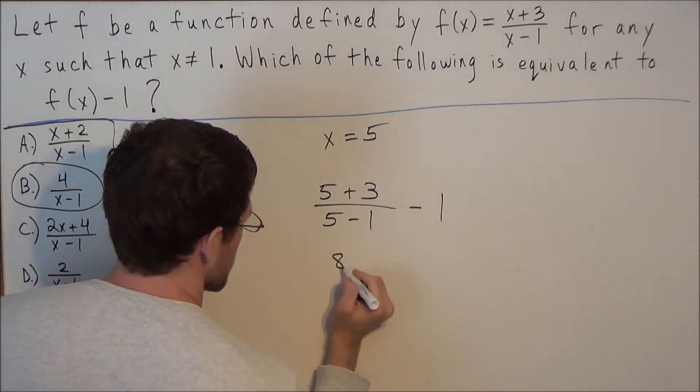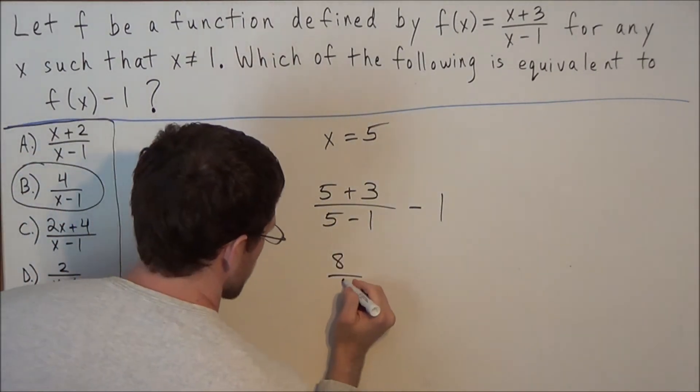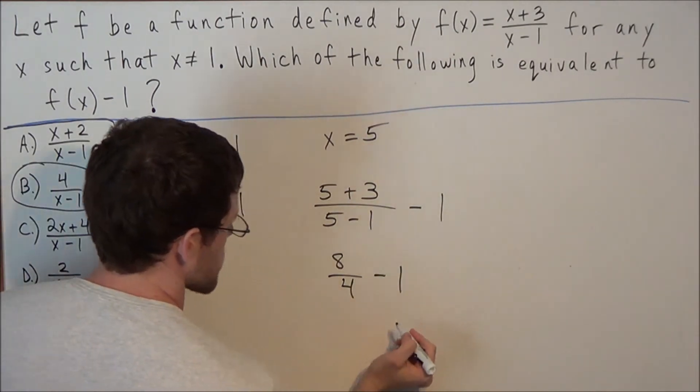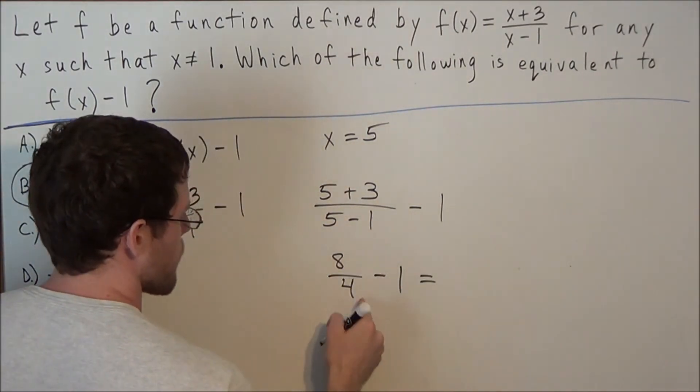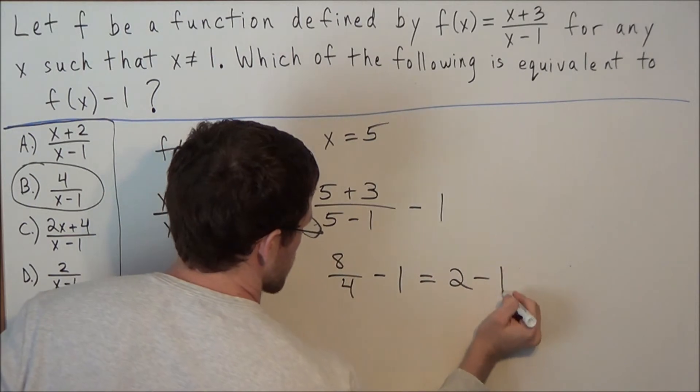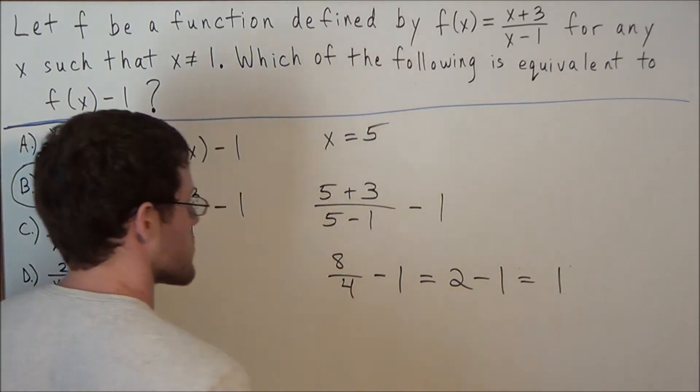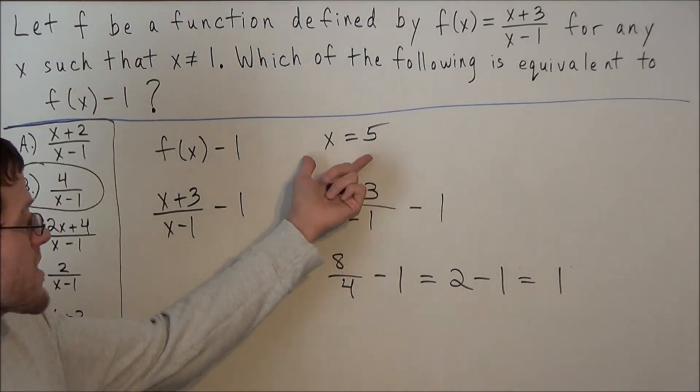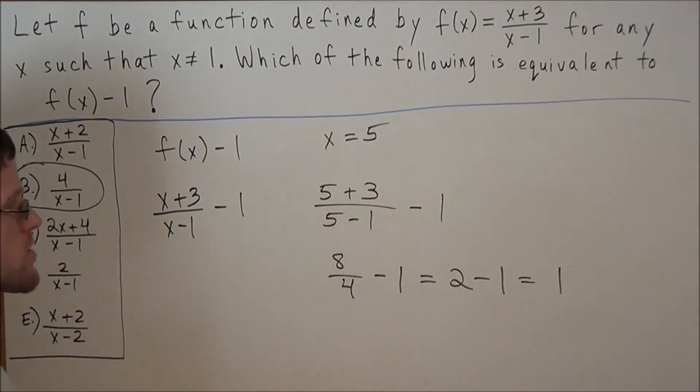And now 5 plus 3 is 8, 5 minus 1 is 4 minus 1. And now 8 divided by 4 is 2. So we have 2 minus 1 and 2 minus 1 is 1. So now we would take x equals 5 and plug it into the answer choices.